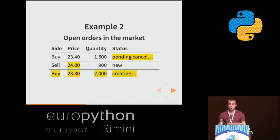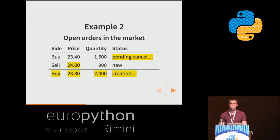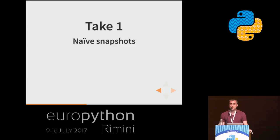Those were two specific examples from the trading world, but of course any other real-time application with a user interface will have data structures like these — typically a list of objects or maybe just a dictionary. So how can you efficiently show your internal state that lives in your Python process to one or more connected clients?